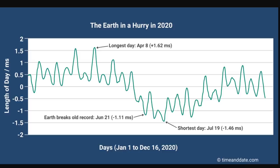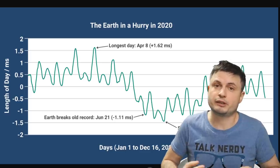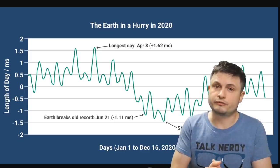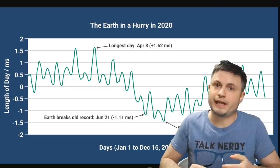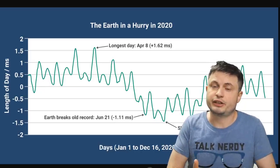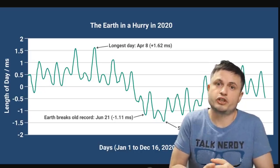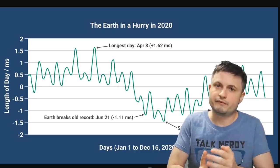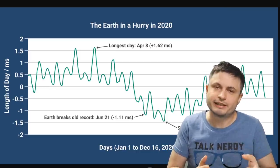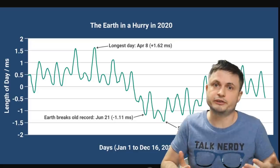From January 1st to December 16th, you can kind of see that the length of the day, especially right here in July, on July 19th, was actually about 1.46 milliseconds shorter than it has been in the past few decades. In other words, for some reason, and that's the reason we can't really explain right now, last year Earth experienced one of the shortest days ever. But obviously this is milliseconds shorter. It's not something that we as humans can feel easily.